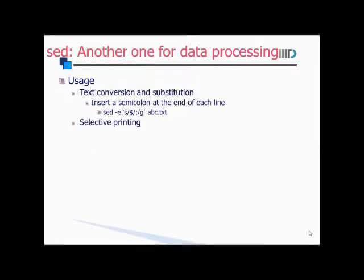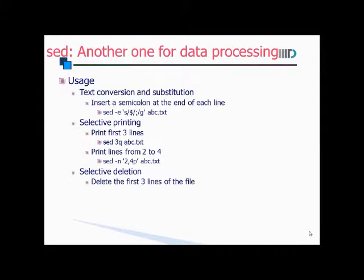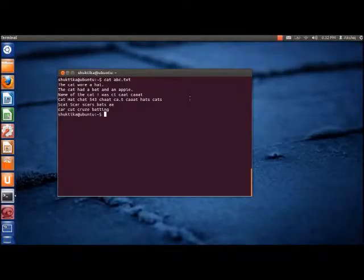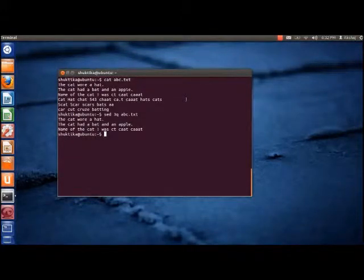Selective printing and deletion can also be done using the sed command. If we want to print the first three lines, we can use the following command. As we can see, the first three lines are printed.